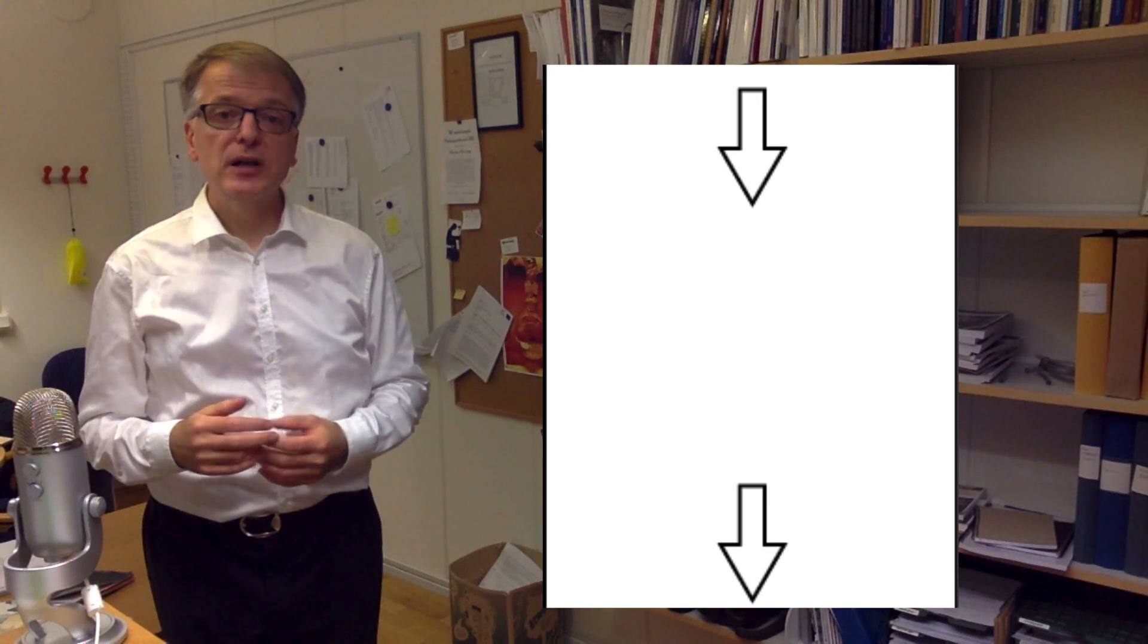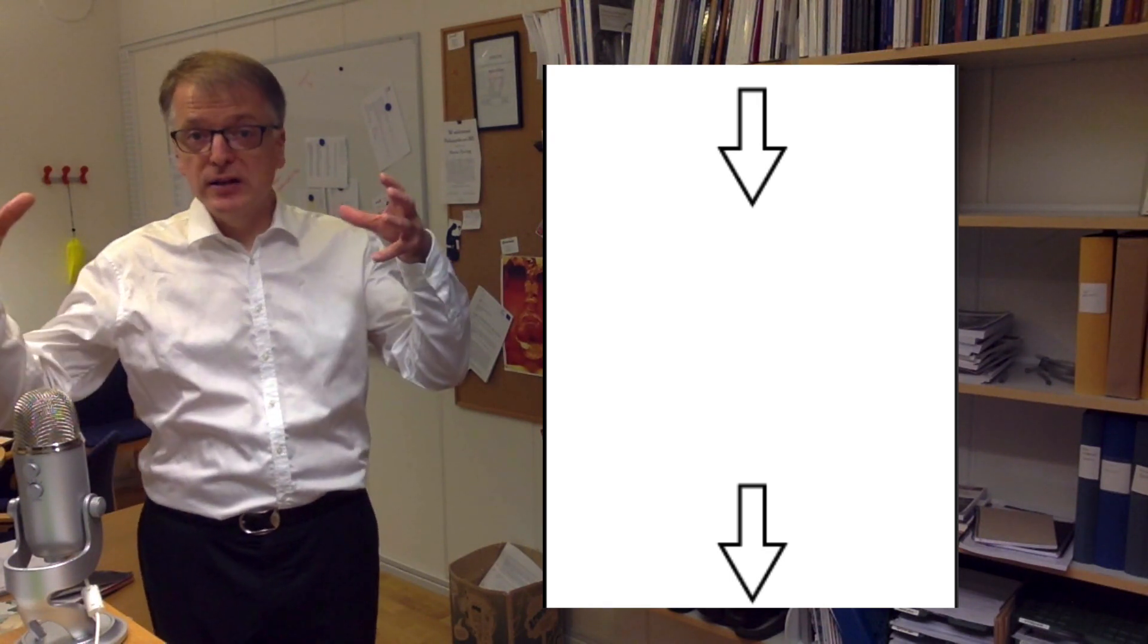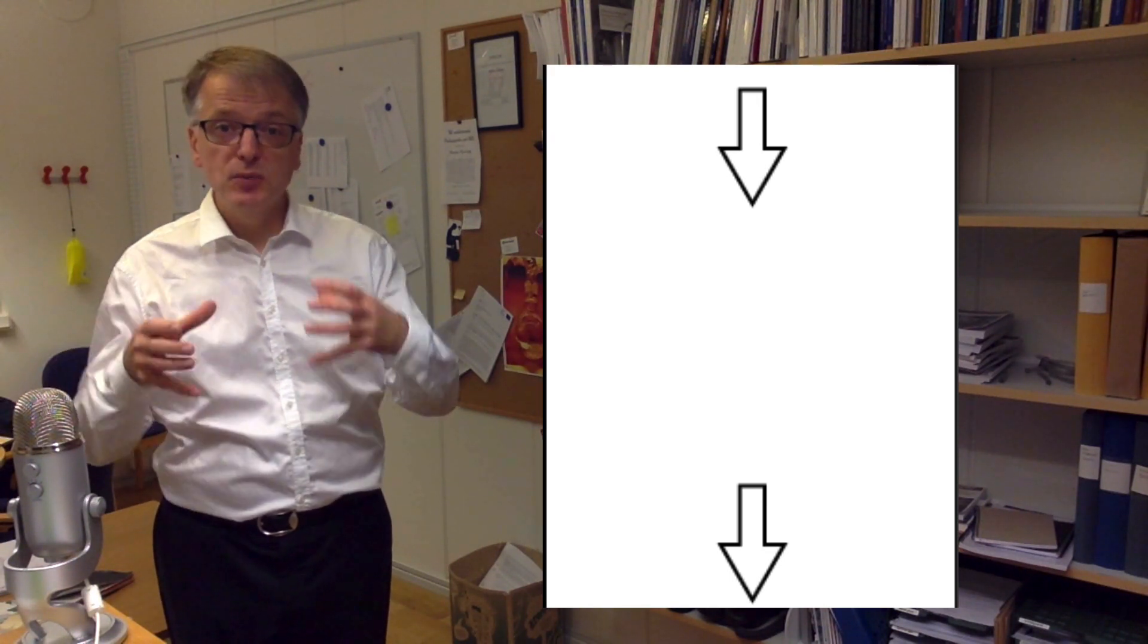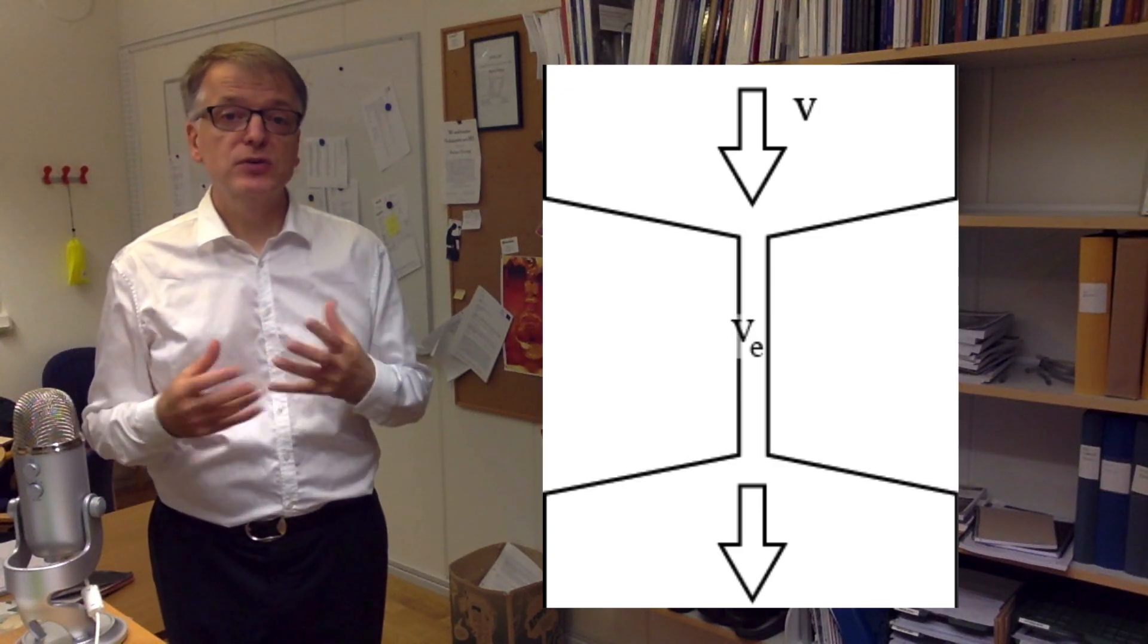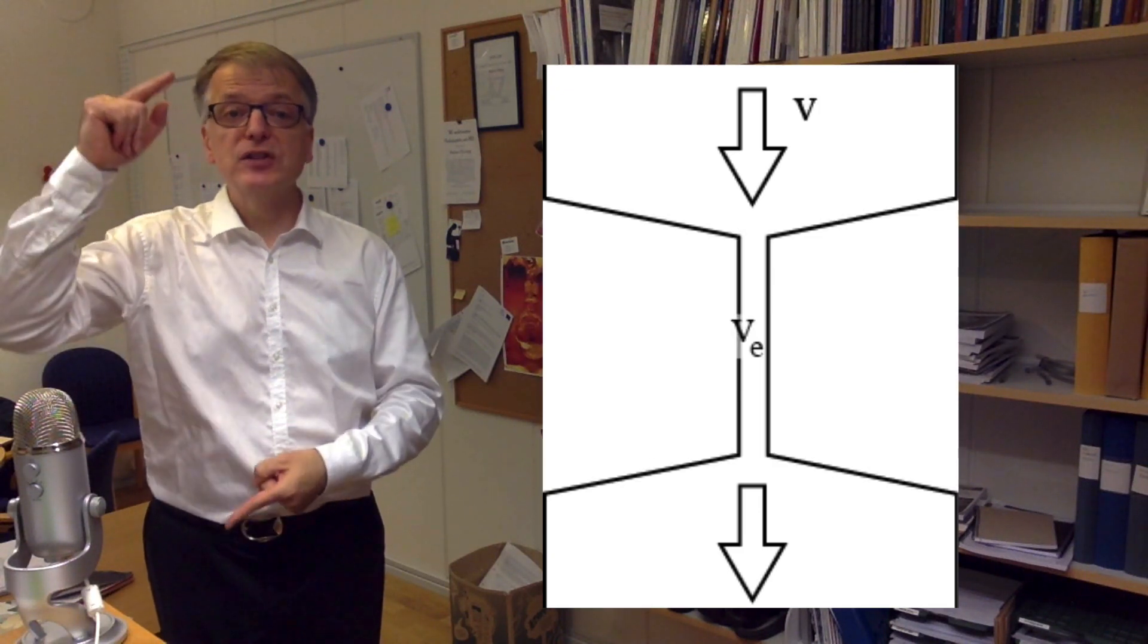Imagine a pipe through which a liquid flows. If you contract the section of the pipe, so we get a smaller cross-sectional area there, the liquid will flow faster in the contracted section than in the undisturbed pipe.